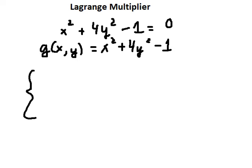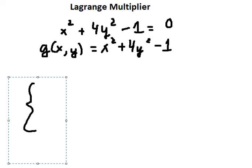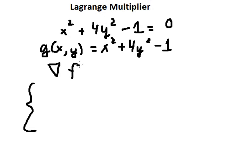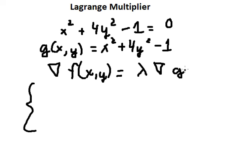That should be about the gradient of f(x,y) equals lambda times the gradient of g(x,y). This is the core Lagrange multiplier condition we will use.